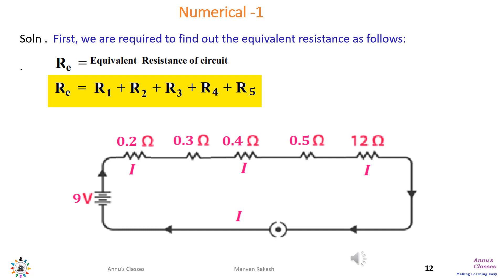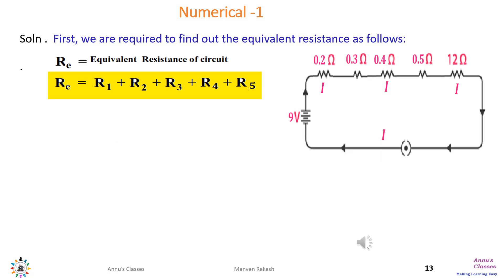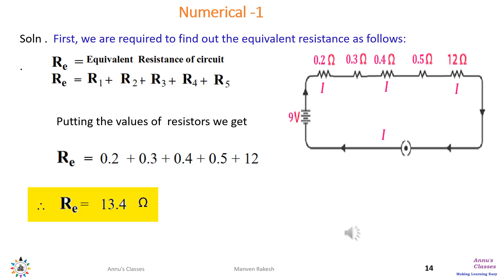If we draw the circuit, it shows five resistors connected in series one after the other to a 9 volt battery. If Re is the equivalent resistance, then Re equals R1 plus R2 plus R3 plus R4 plus R5. Putting in the values: 0.2 plus 0.3 plus 0.4 plus 0.5 plus 12 gives us Re equal to 13.4 ohms as the total resistance of the circuit.